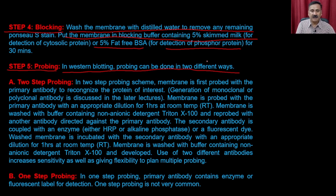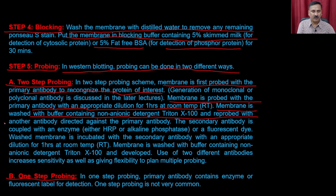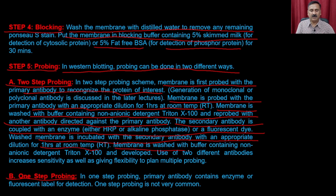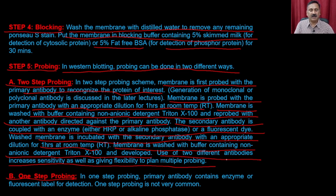Western blot probing can be done in two ways: two-step probing or one-step probing. In two-step probing, the membrane is first probed with the primary antibody to recognize the protein of interest, incubated with the primary antibody at the appropriate dilution for one hour, then washed with buffer containing a non-ionic detergent like Tween. The membrane is then reprobed with a secondary antibody directed against the primary antibody. The secondary antibody is coupled with an enzyme or a fluorescent dye. The washed membrane is incubated with the secondary antibody at appropriate dilution for one hour, washed again, and developed.